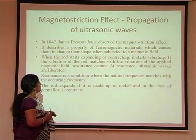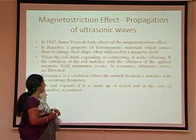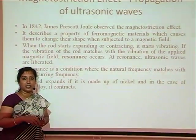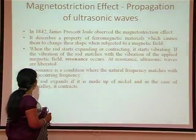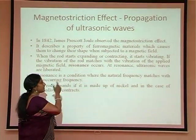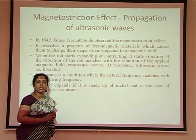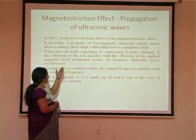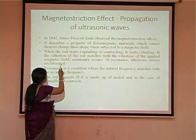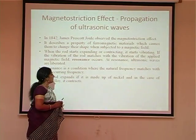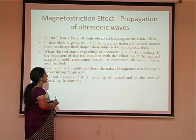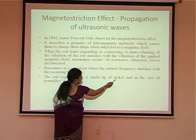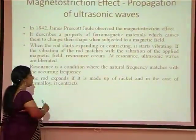The first one is the magnetostriction effect. In 1842, James Prescott Joule observed this magnetostriction effect when he was analyzing some magnetic materials in the presence of current. If you place any ferromagnetic rod between the pole pieces of a magnet, the rod changes its length — that is called the magnetostriction effect. It describes the property of ferromagnetic materials which causes them to change their shape when subjected to a magnetic field. The rod starts expanding or contracting depending upon the material — in the case of nickel the rod always expands, and in the case of permaloy it contracts.